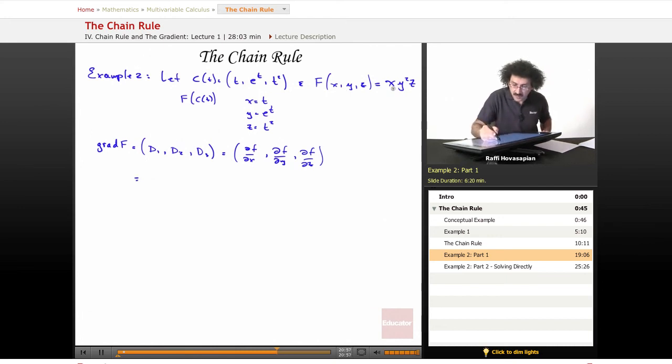Okay. So now let's go ahead and actually compute that. The first partial, the derivative of this function with respect to x is y^2·z. The derivative with respect to y is going to be 2xyz. And the derivative with respect to z is going to be xy^2. So this is my gradient of f.